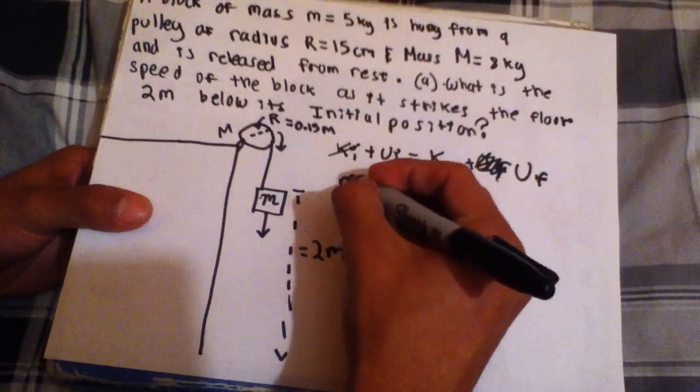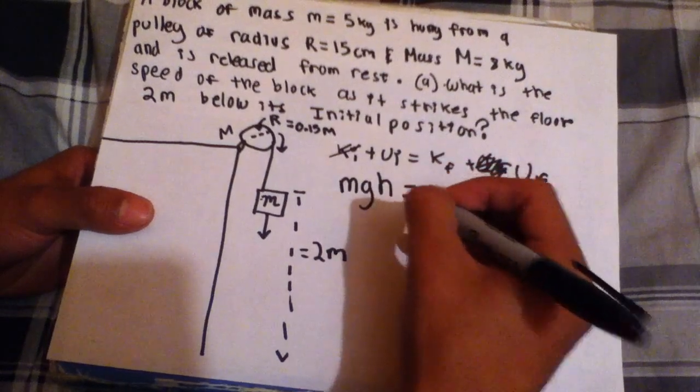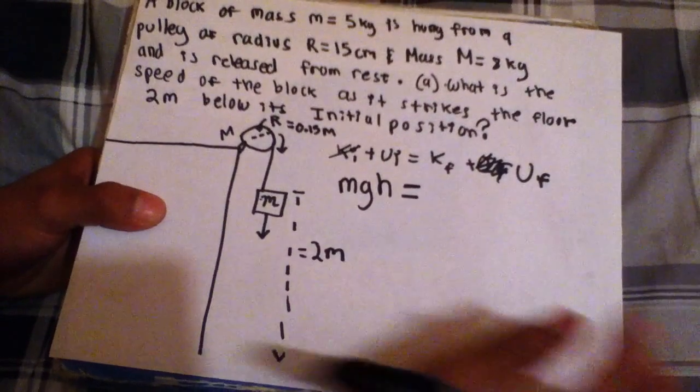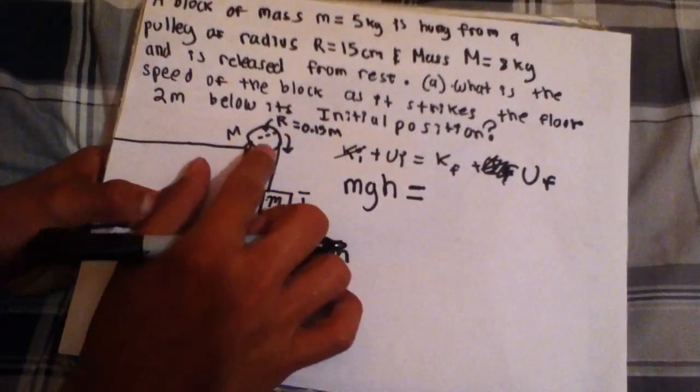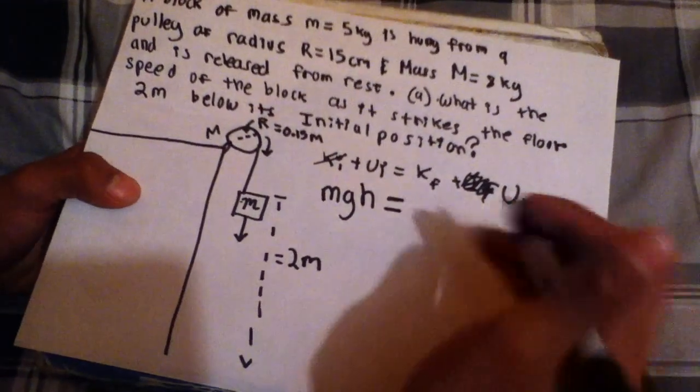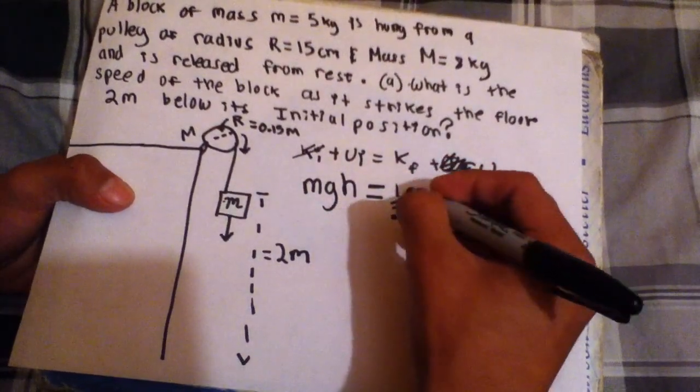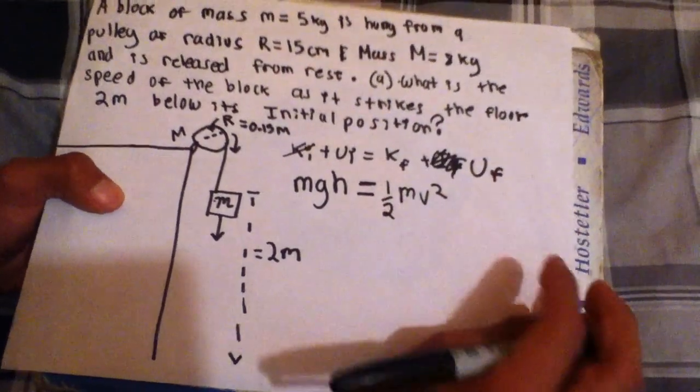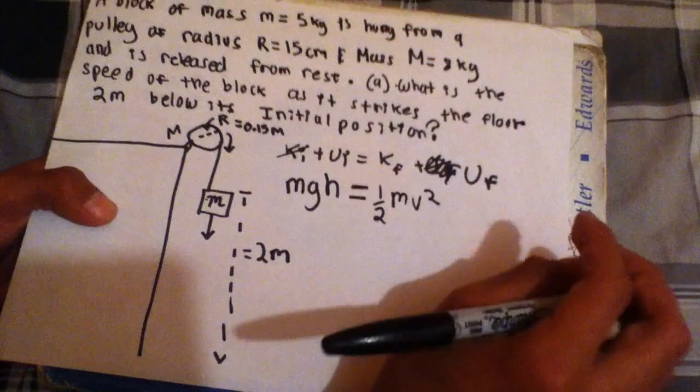So, and the kinetic energy final is going to be the kinetic energy not only of this block, but also the rotational kinetic energy of this pulley, which we will see right now. So the block will be one half Mb squared. This is just the regular formula for kinetic energy.